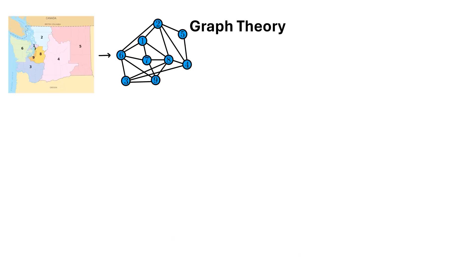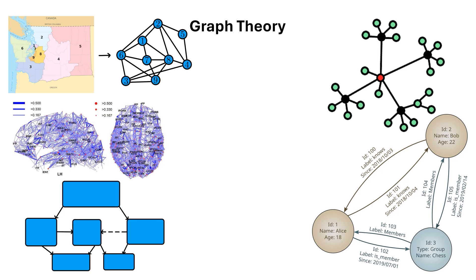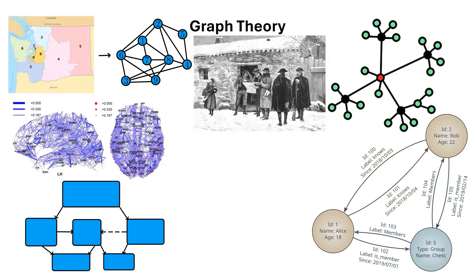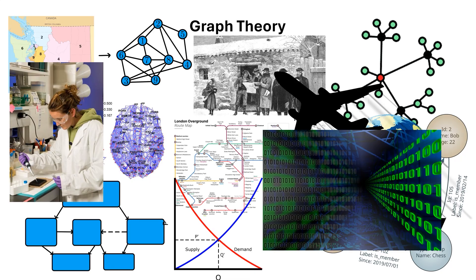Applications of graph theory include gerrymandering and voting, networks, database management, algorithm design, biological networks, phylogenetics, social network analysis, opinion dynamics, transportation, logistics, chemistry, finance, computer science, and more.